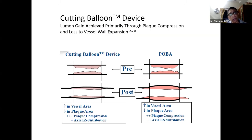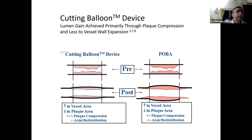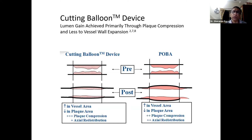Using cutting or scoring balloons, we can open the artery at lower, optimum pressures compared to plain balloons or POBA. The plaque is more modified by the cutting balloon than the plain balloon. It increases vessel lumen by reducing the plaque area, whereas plain balloons work more on the non-calcified area and stretch the normal vessel wall. That is why cutting and scoring balloons are more useful than POBA in calcified vessels.